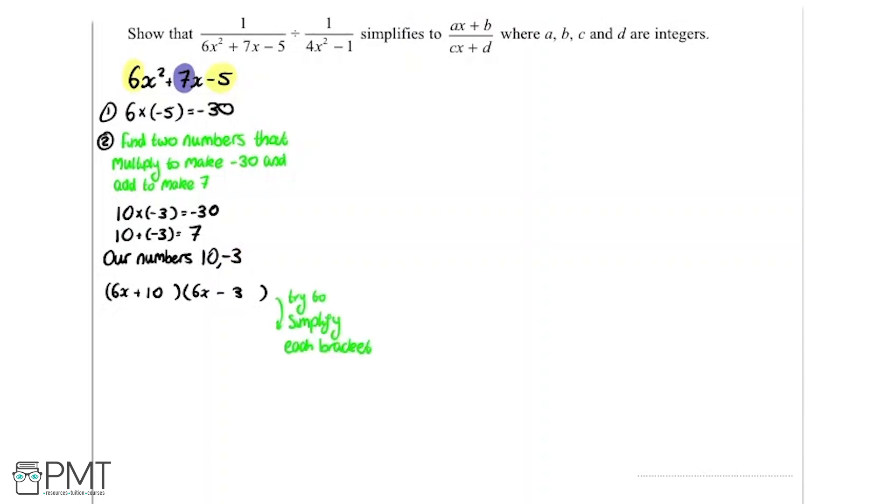And the next step is we need to look and try and simplify the brackets. So what I mean by that, I'm going to have a look at the first bracket first. And you can see I can divide both by 2. So if I do that I'll get 3x here plus 5. And I can't simplify that anymore, so we're good with that.